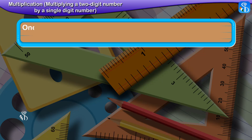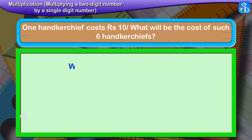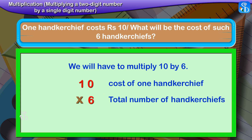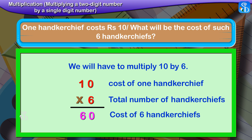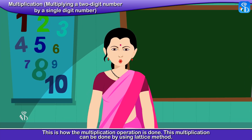Example: One handkerchief costs 10 rupees. What will be the cost of 6 such handkerchiefs? We will have to multiply 10 by 6. 10 is the cost of 1 handkerchief, multiplied by 6 — the total number of handkerchiefs — is equal to 60, the cost of 6 handkerchiefs. This is how the multiplication operation is done.